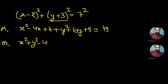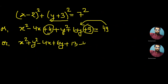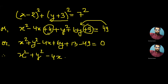Rearranging, we write x² + y² - 4x + 6y, and then 4 + 9 = 13, so +13. Taking 49 to the left side gives -49, making the equation x² + y² - 4x + 6y + 13 - 49 = 0, which gives x² + y² - 4x + 6y - 36 = 0.